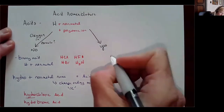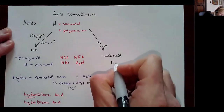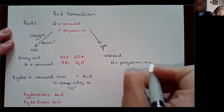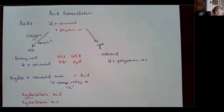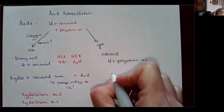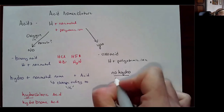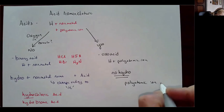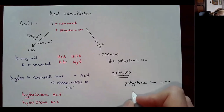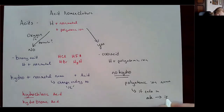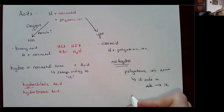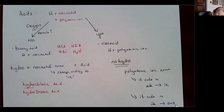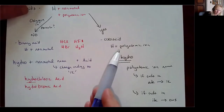If there is oxygen present, then I have an oxoacid — hydrogen plus a polyatomic ion, because most polyatomic ions have oxygen in them. To name these, there's no 'hydro' prefix. I start with the polyatomic ion name and change the ending: if the polyatomic ion ends in '-ate', change it to '-ic'; if it ends in '-ite', change it to '-ous'. That's the simple nomenclature between binary acids and oxoacids.